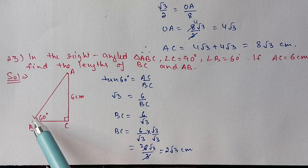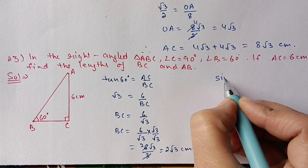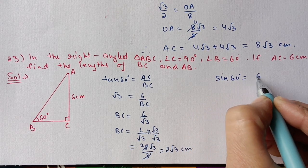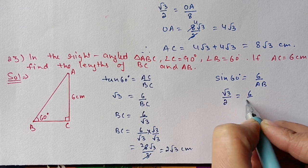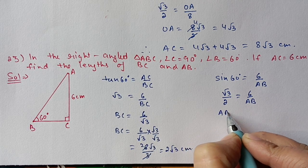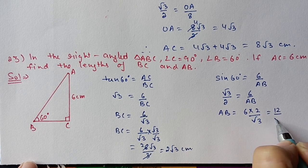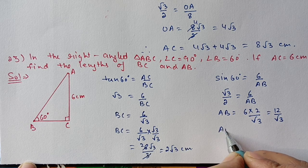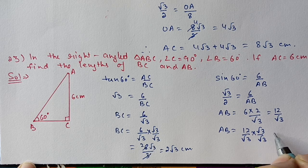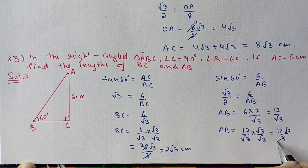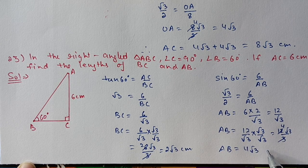Now we find AB. The relation between AC and AB uses sine: sin 60° = AC/AB, so √3/2 = 6/AB. Shifting AB to this side and √3 to the other: AB = 12/√3. Rationalizing by multiplying with √3: 12√3/3 = 4√3. So AB = 4√3 centimeters.